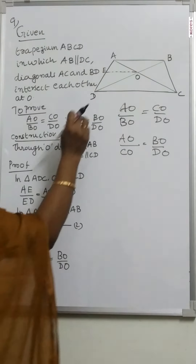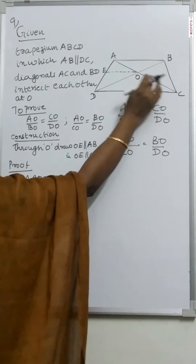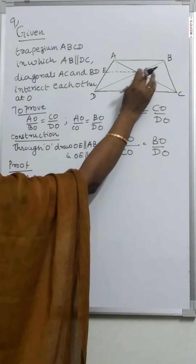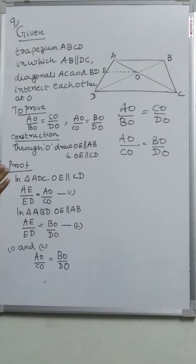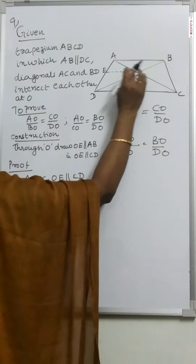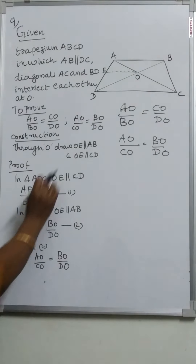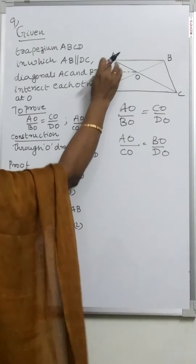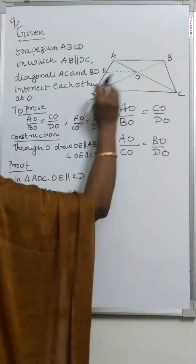Next step: in triangle ABD, OE is parallel to AB. Therefore, we can write AE by ED is equal to BO by DO. That is equation 2.